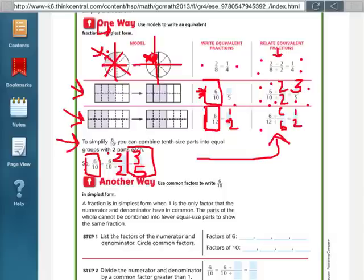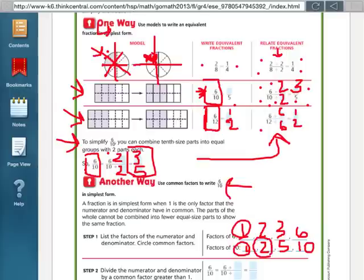Okay, so that's the way to do it with models. Then, here we have another way, which is using common factors, to write 6 tenths in its simplest form. So, you would write out first the factors of 6, 1 times 6, and 2 times 3, and the factors of 10, 1 times 10, and 2 times 5. Then, you'd circle the common factors. They both have 1, and they both have 2.